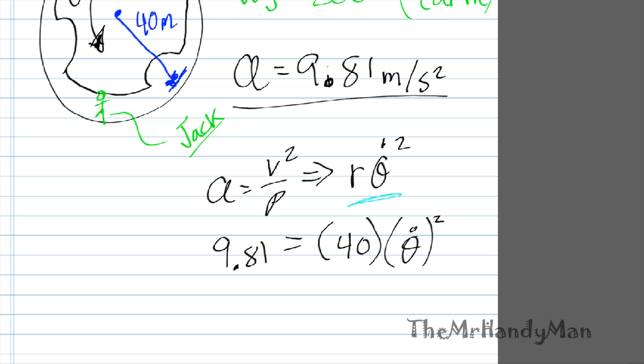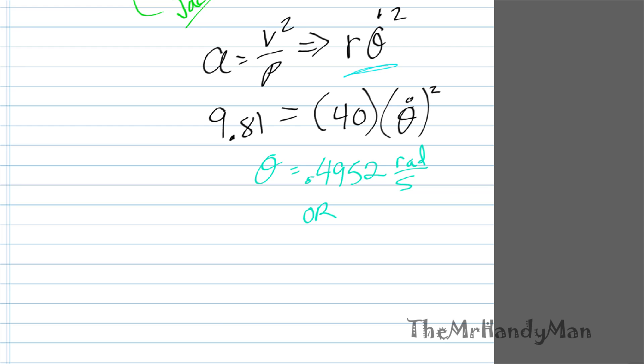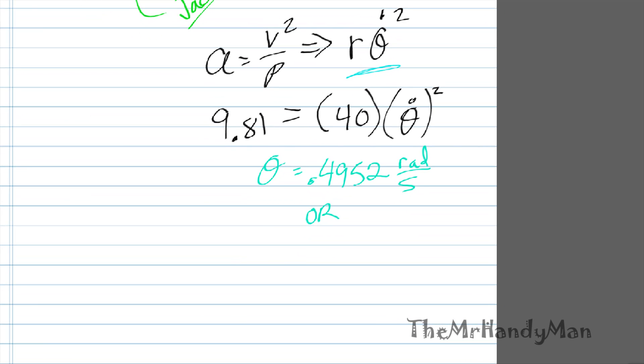When we solve for theta, theta equals 0.4952 radians a second. Or better way to describe it, it's going to be 4.73 rpms.